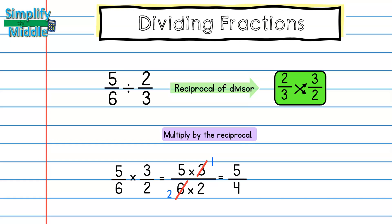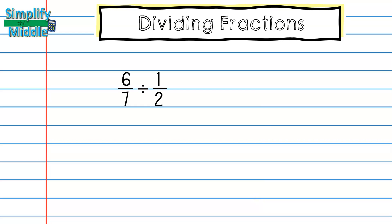Whenever I'm working with fractions and mixed numbers I want to make sure my answer is a mixed number instead of an improper fraction. I know that there is one group of 4 inside 5 with one left over, so my answer is 1 and 1/4. Let's take a look at another example.